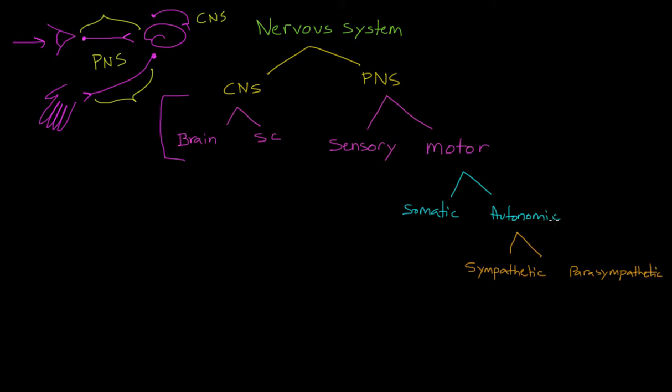Our autonomic nervous system controls our glands and the muscles of our internal organs. These are things we perceive to be on autopilot, like digestion or heartbeat. They're things that can be consciously overridden, but they usually operate on their own.